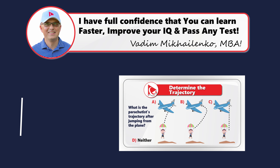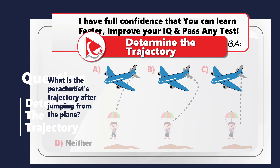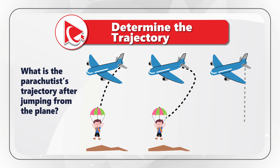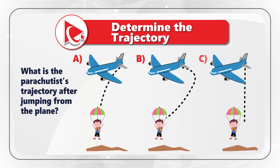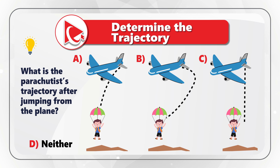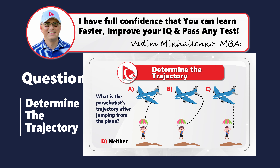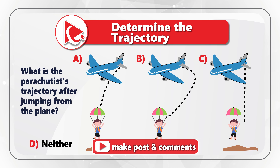Let's look at the question where you need to determine the trajectory after a parachutist jumps from the plane. Based on the wind and other external conditions there would be multiple choices, but fortunately you need to select only one out of four possible choices — A, B, and C — and if none are correct, Choice D for neither one. Take a close look to determine the parachutist's trajectory after jumping from the plane. I'm moving forward to share my version of the answer, and if you have a better way to solve it, please post in comments.